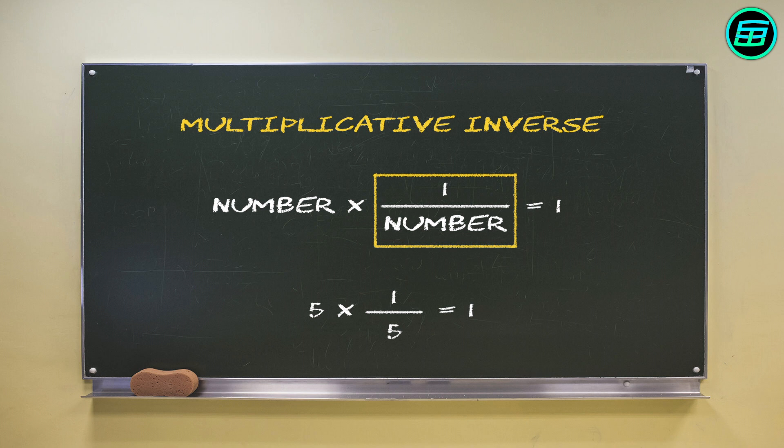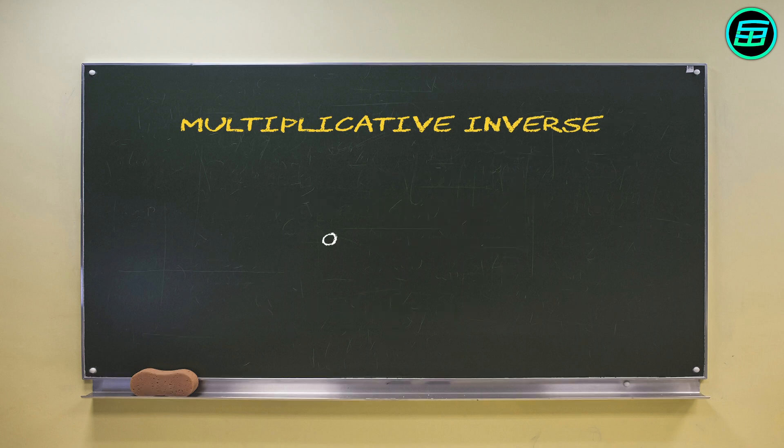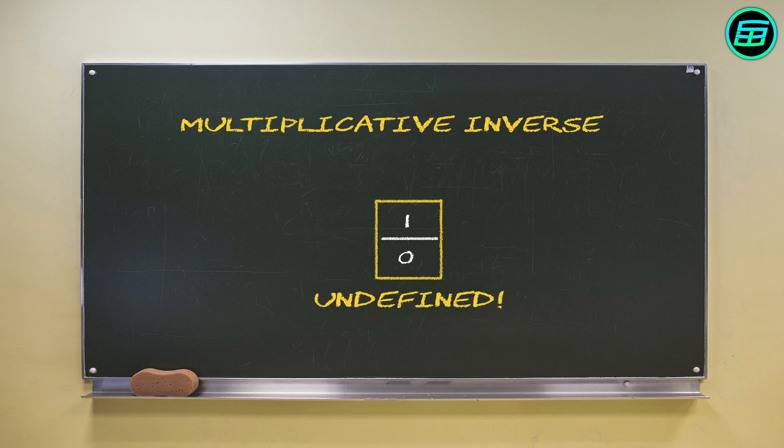If we apply this concept to 0, the multiplicative inverse of 0 should be 1 over 0. And 0 times 1 over 0 should give 1. But that can't be right because a number multiplied by 0 is always 0. Therefore, 0 doesn't have a multiplicative inverse. So 1 over 0 is undefined.